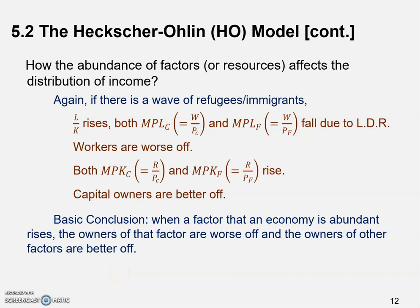This is how the abundance of factors affects the distribution of income. Up to this point we've finished our discussion of the specific factors model looking only at the domestic economy. In the next video, we're going to add international trade to the model and see how trade affects different variables, including output, relative prices, and the distribution of income.